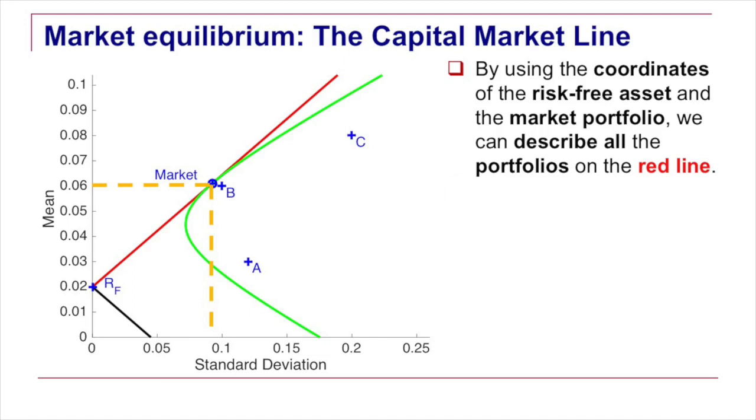The slope is going to be defined by the difference between the expected return on the market and the risk free rate. This is the height of the point along the y-axis of the market point minus the height of the risk free rate. So here it will be a little bit more than six percent minus the two percent of the risk free rate.